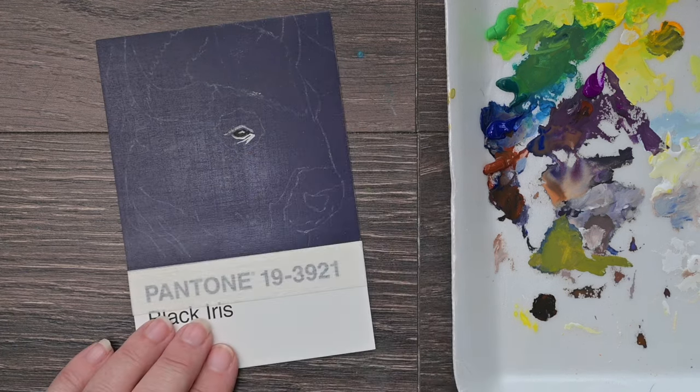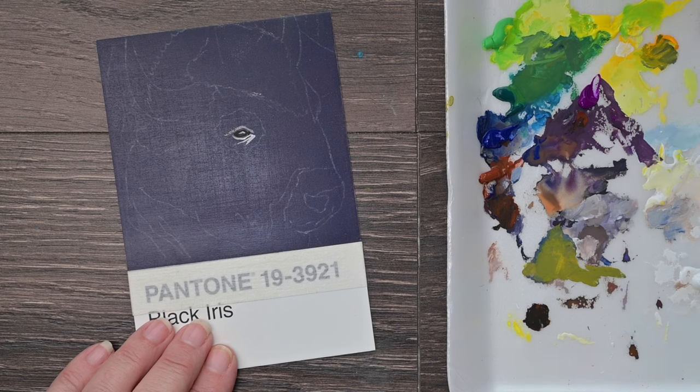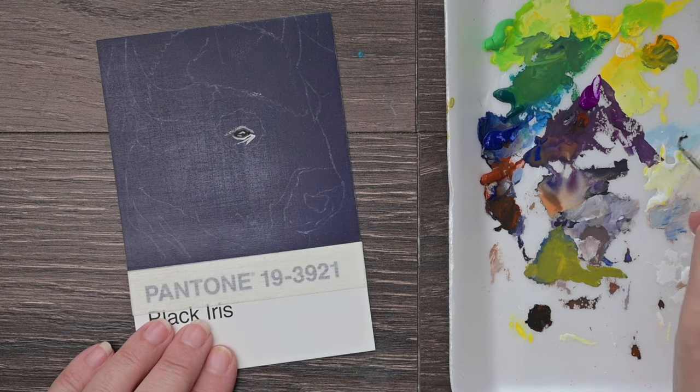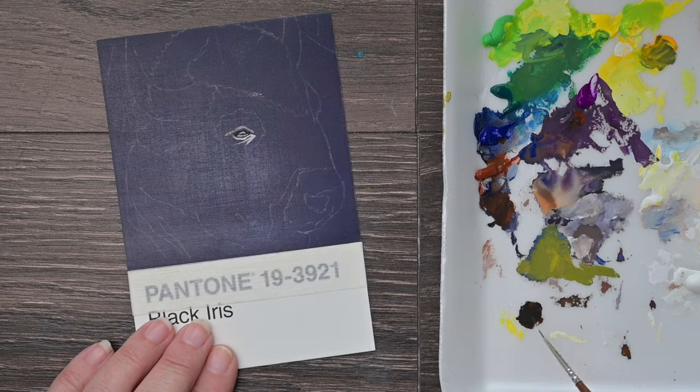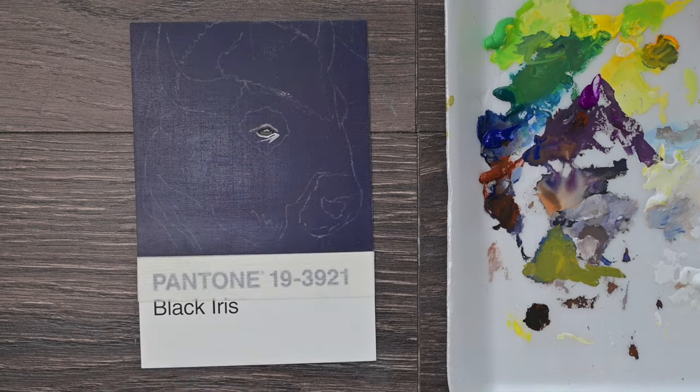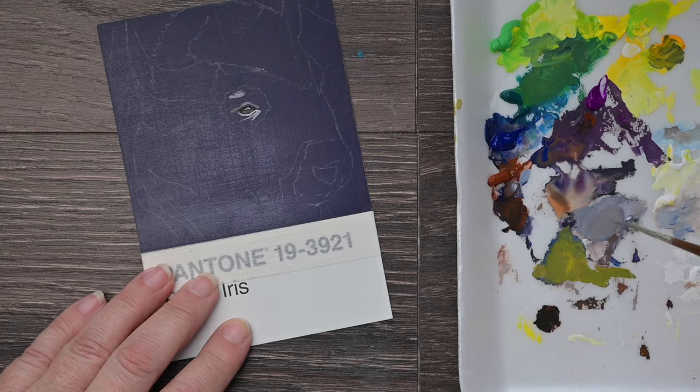I first started off by coating this Pantone postcard with a couple of coats of clear gesso. Because that card does have a shiny surface, I wanted to make sure that my gouache stuck to it, grabbed onto that surface really well.